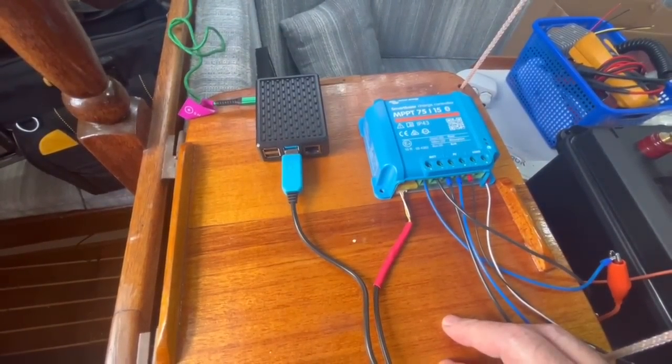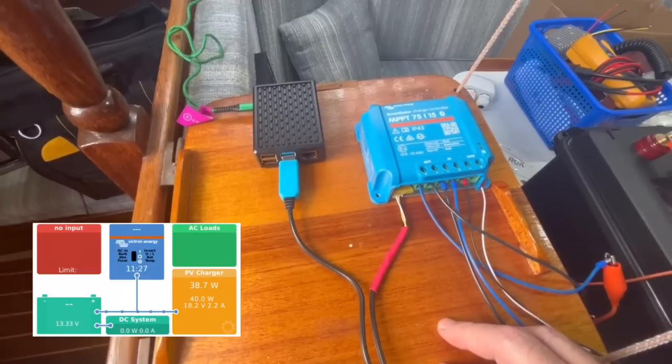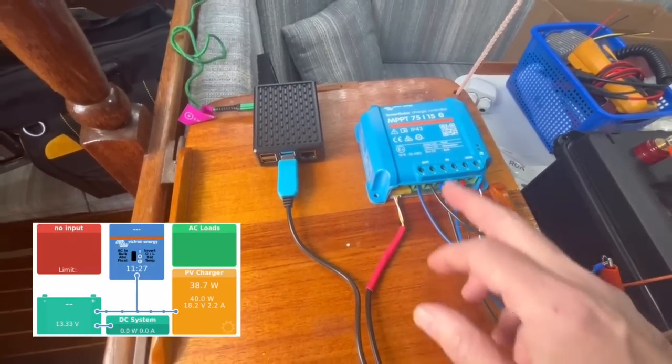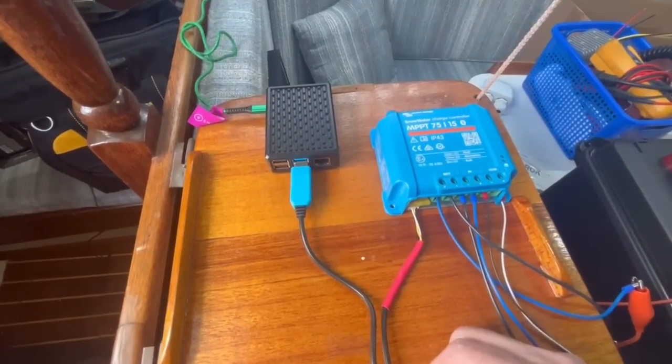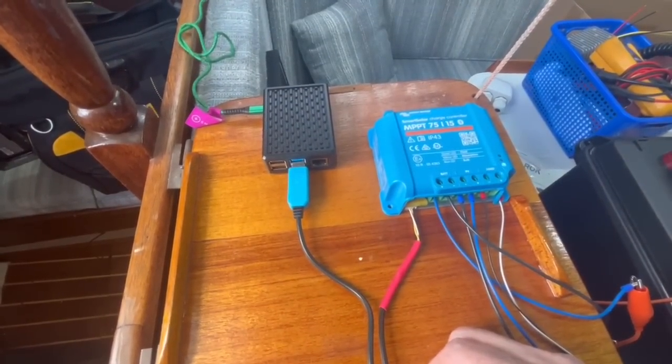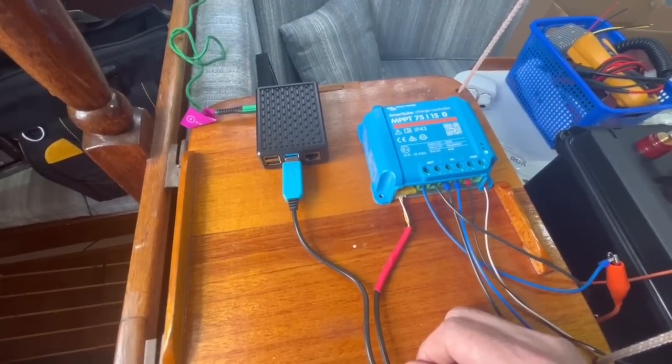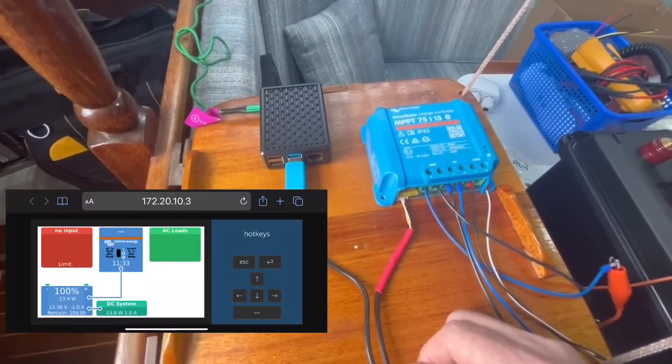it automatically recognizes that the Venus OS software recognizes it right away. And it tells, this guy tells the Venus OS software, hey, I'm a solar charge controller. Here's all my information. When I plugged it into the smart shunt, it did the exact same thing. It said, hey, I'm a smart shunt. Here's my information.